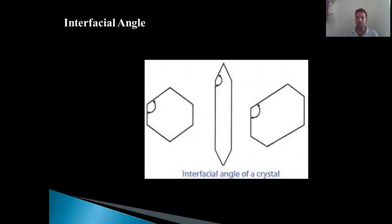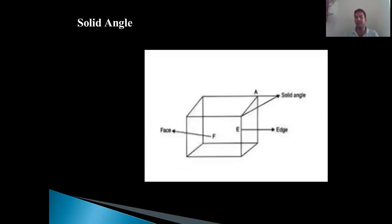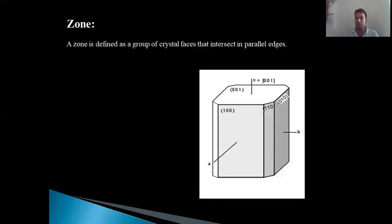The interfacial angle is the angle between two adjacent faces — it could be acute, obtuse, or perpendicular, depending on the crystal species. Two different crystal species can have similar or different interfacial angles. Solid angles are defined as the angle formed by the intersection of three or more faces; the corners of the crystal where three faces intersect signify the formation of a solid angle. A zone is defined as a group of crystal faces that intersect in parallel edges.